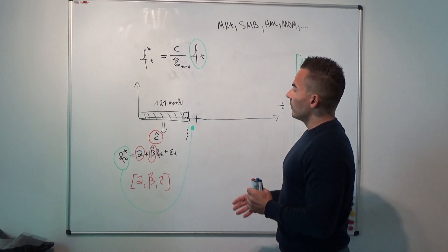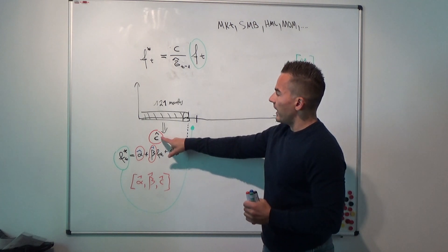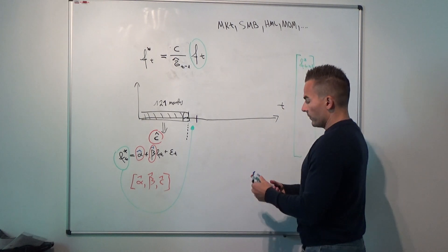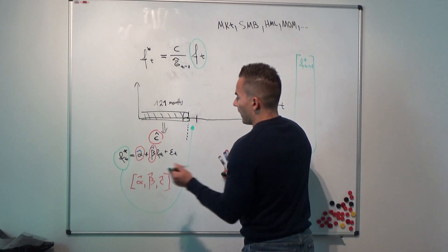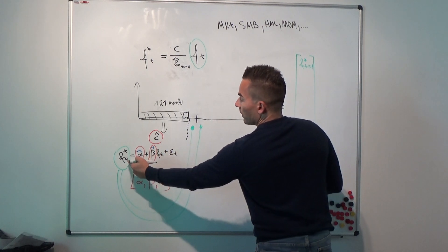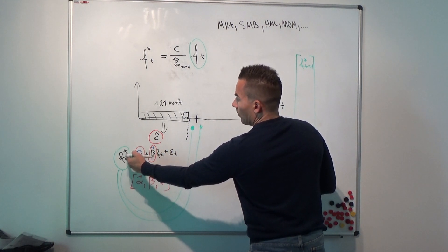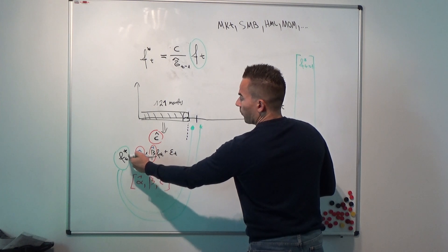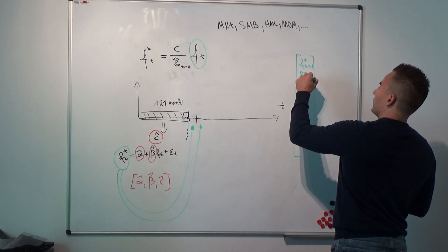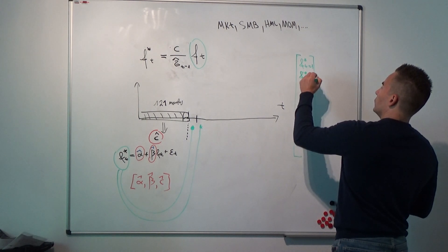What happens now is we get a new estimate for c-hat, and we get a new estimate for alpha-hat and beta-hat. Consequently, we get then for the next period here also a new factor, or risk-managed factor, or volatility-managed factor. And we stack it again here in a vector, which is our f-star t equal to 2.